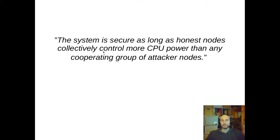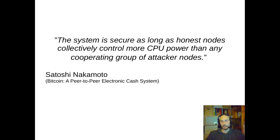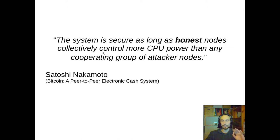I want to start this talk with a quote some of you may know. The system is secure as long as honest nodes collectively control more CPU power than any cooperating group of attacker nodes. This quote is from the original Bitcoin white paper by Satoshi Nakamoto, and in this talk I want to emphasize one word of this quote, namely 'honest'.